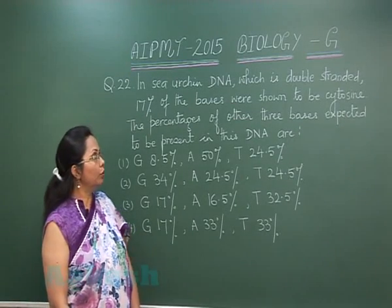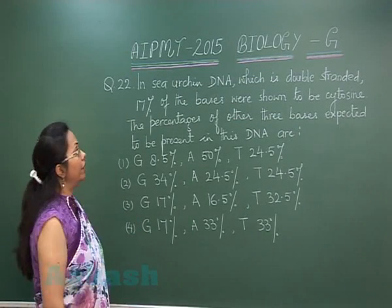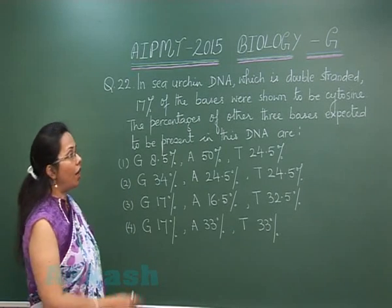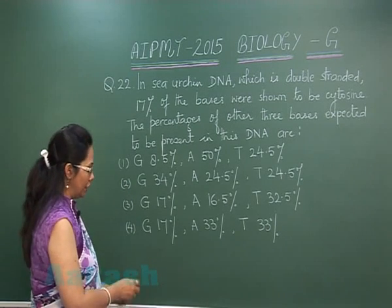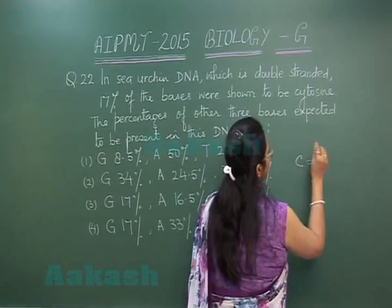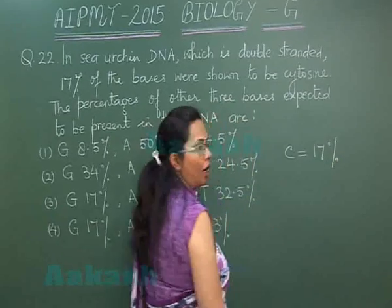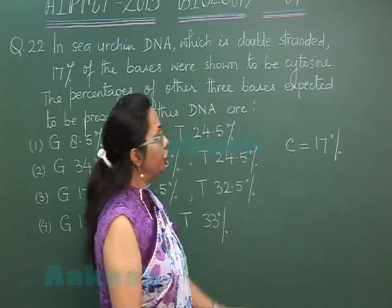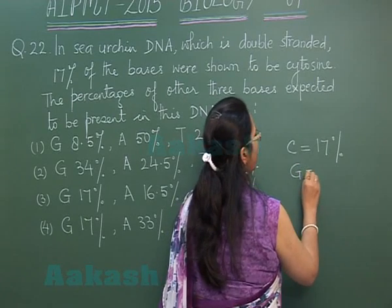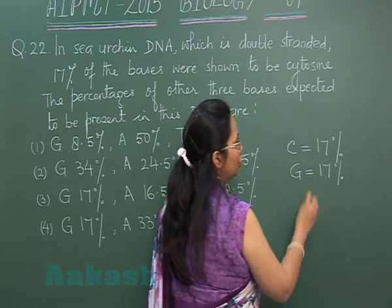Question number 22. In a double stranded DNA of sea urchin, 17% of the bases are cytosine. Applying Chargaff's rule, we know that if cytosine is 17%, guanine will also be 17%, because these two are equal.